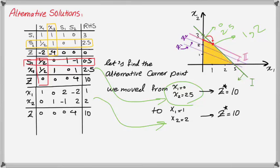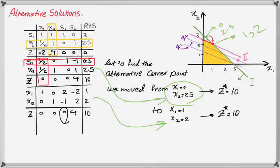In this new table, you can also identify the condition for an alternative solution. S1 is now a non-basic variable but has a zero in the row of Z. This means that if you do an iteration over S1, you will get another alternative optimal solution — but you will actually go back to the previous table, since you are bringing S1 in instead of X1. So you switch between the two solutions if you keep entering the non-basic variable with a value of zero in the row of Z.